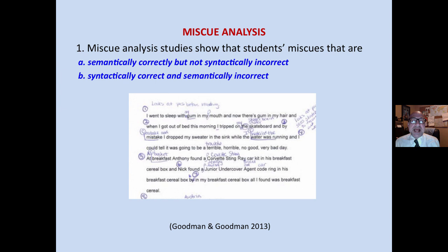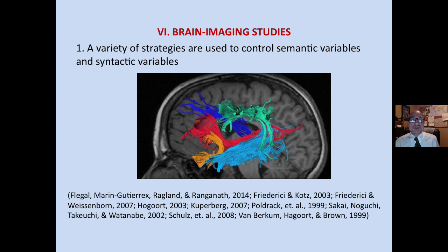Miscue analysis, as well, shows that students' miscues are often semantically correct but not syntactically correct, and vice versa — syntactically correct and not semantically correct. We are creating meaning with print. Brain imaging studies also use a variety of strategies to control both semantic and syntactic variables, showing the systems or parts of our brains used for each one of these.